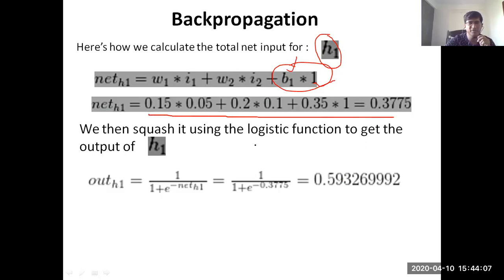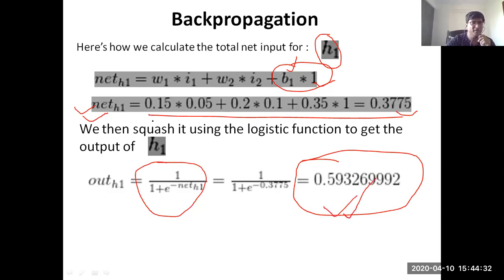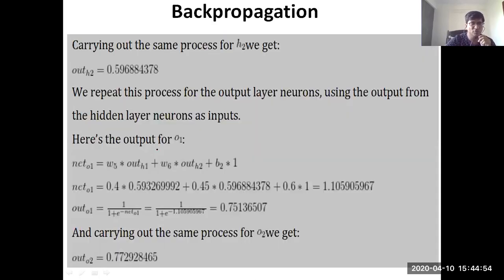Calculating this formula, the net input for h1 comes out to be 0.377. We then apply the activation function — the sigmoid function — which converts the net input to a range between 0 and 1. The output of h1 comes out to be 0.5. Similarly, calculating h2 in the same manner, the value comes out to be 0.59.